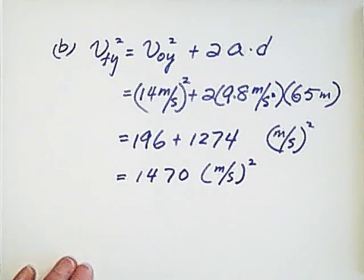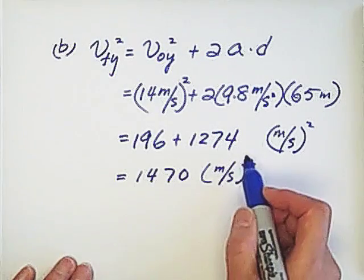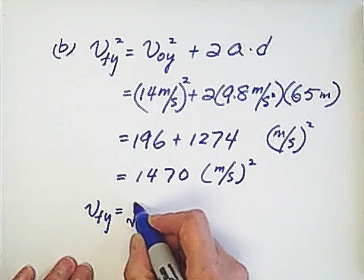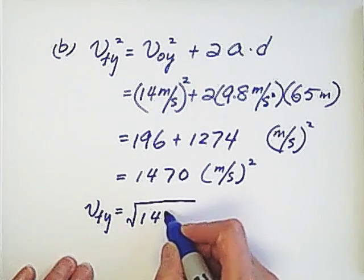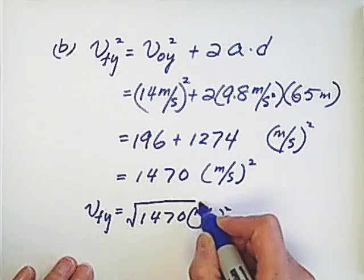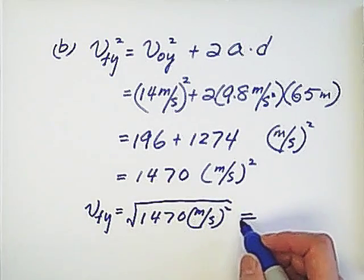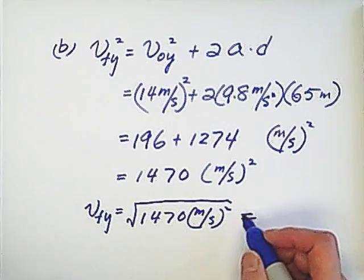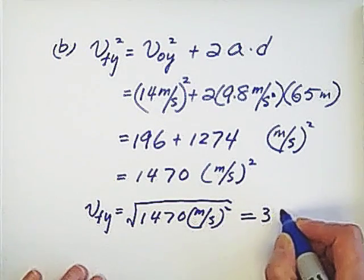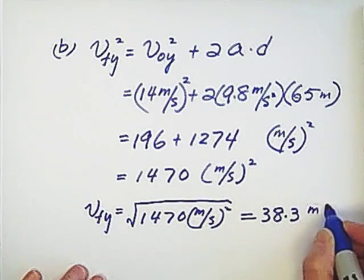So the answer is, and then plus 196 equals 1470 meter per second square. Because this is v final square, that's why we get the square root. So the v final y equals square root 1470 meter per second square. The answer is 38.3 meter per second.